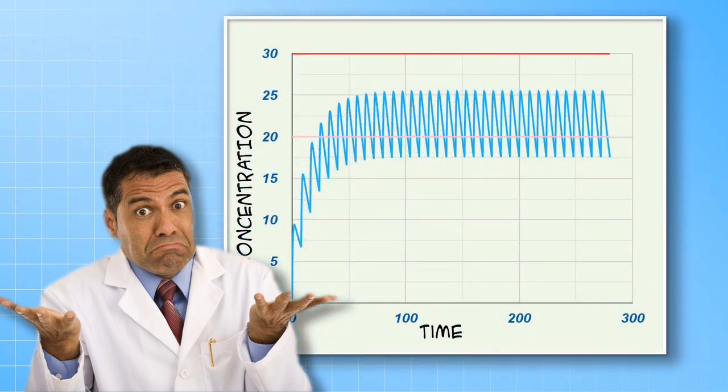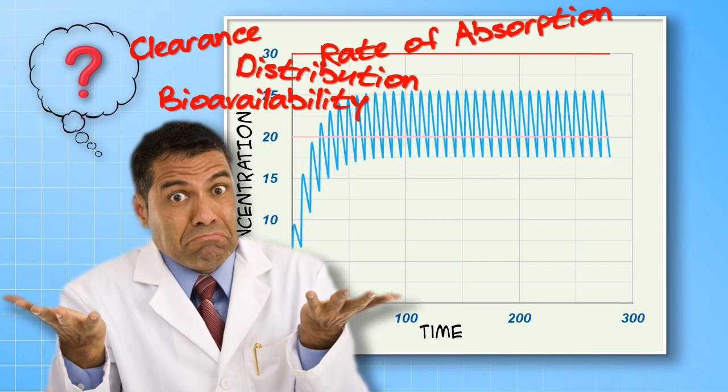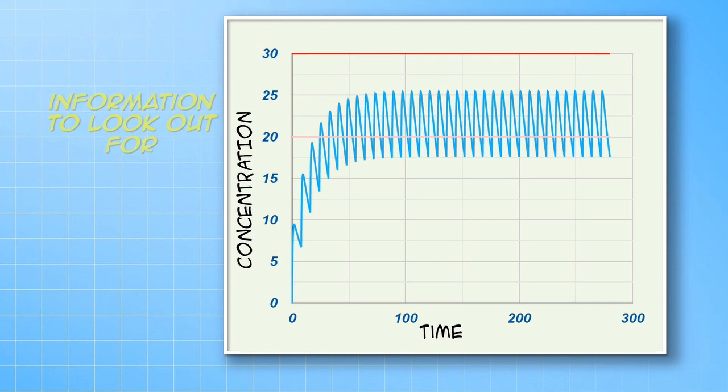But what do we do with all these parameters? To answer that, we have to know what to look for in the plasma concentration graphs. First of all, look at how long it takes for the concentrations to reach steady state.